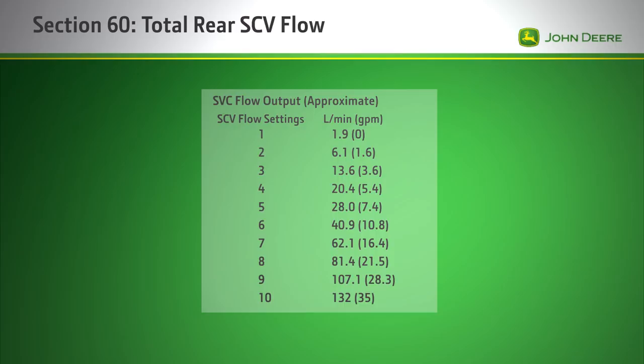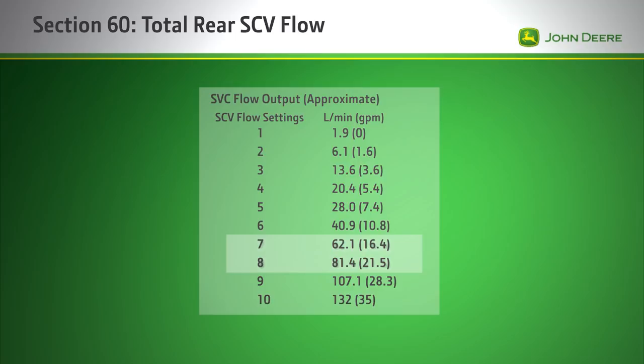For example, if one of the hydraulic functions requires 18 gallons per minute, set that SCV to approximately 7.6.